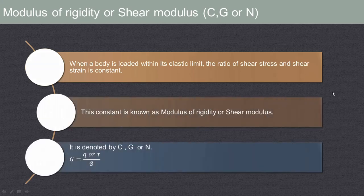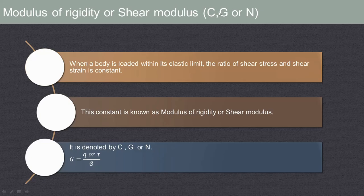Similarly, modulus of rigidity or shear modulus is denoted by C, G, or N. It is defined as: when a body is loaded within its elastic limit, the ratio of shear stress to shear strain is constant. So G equals Q upon phi, or tau upon phi. Shear stress is denoted by Q or tau, and shear strain is denoted by phi.